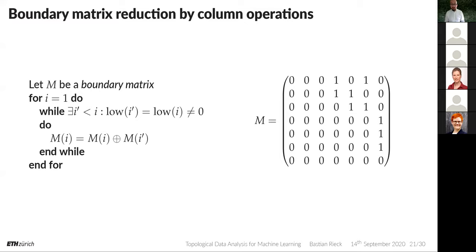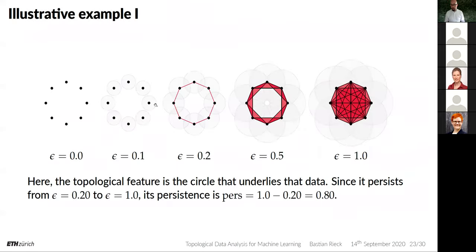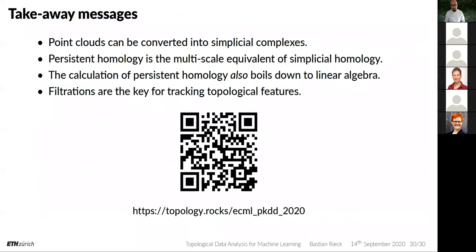As a gut feeling: you're trying to find out where the independent features — like a circle — are. Once you get to this matrix that kind of represents those independent features, you can read them out more easily. We're trying to look at how the filtration gives rise to certain topological features. For this, we need to figure out which features are actually independent in the complex and which features are related using this creator-destroyer relationship.